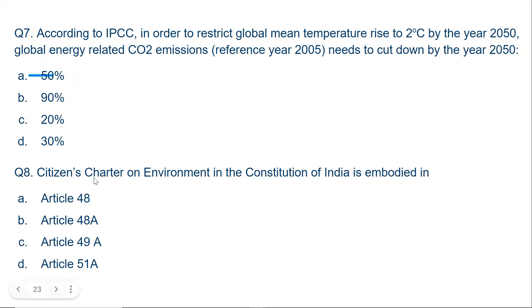Question 8. The Citizens Charter on Environment in the Constitution of India is embodied in which article? The correct answer is D, Article 51A.